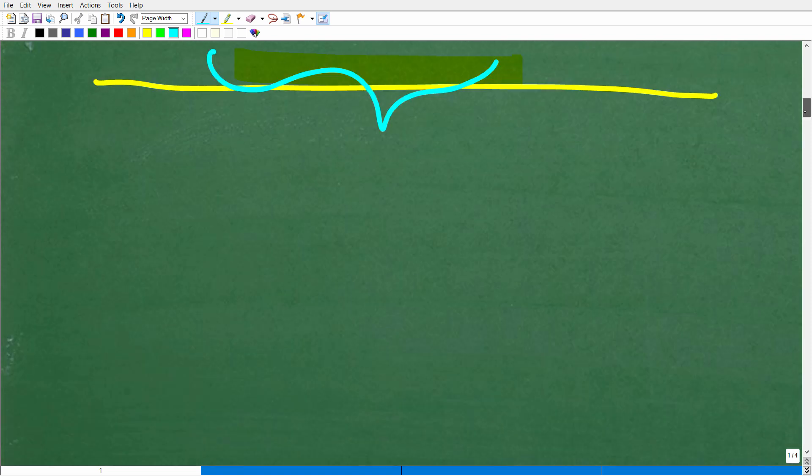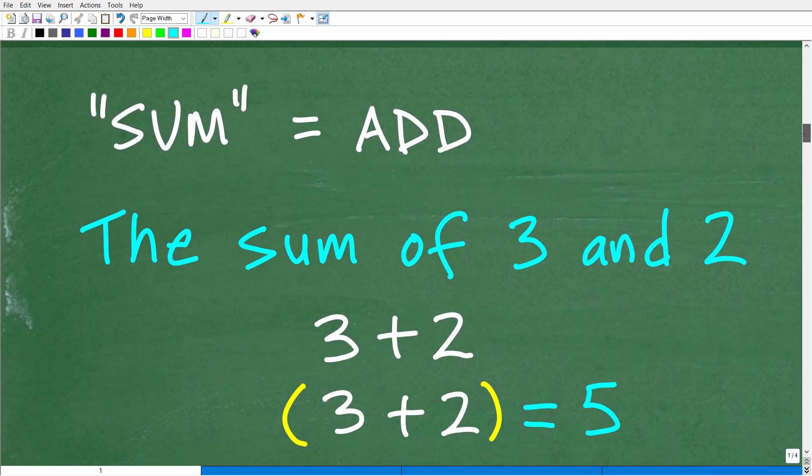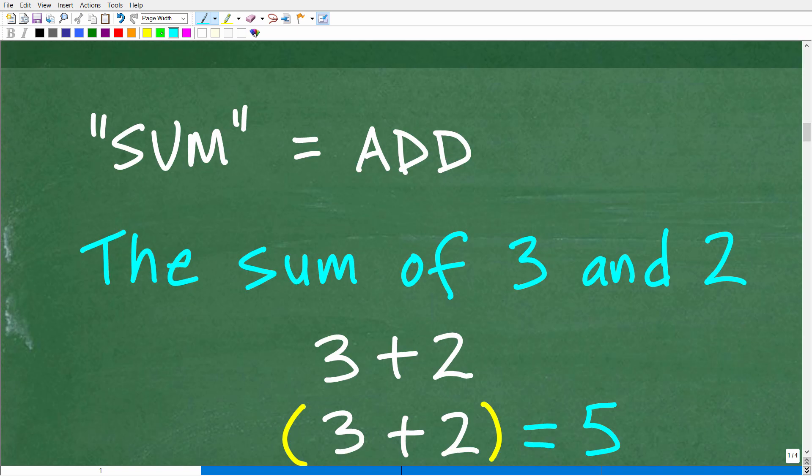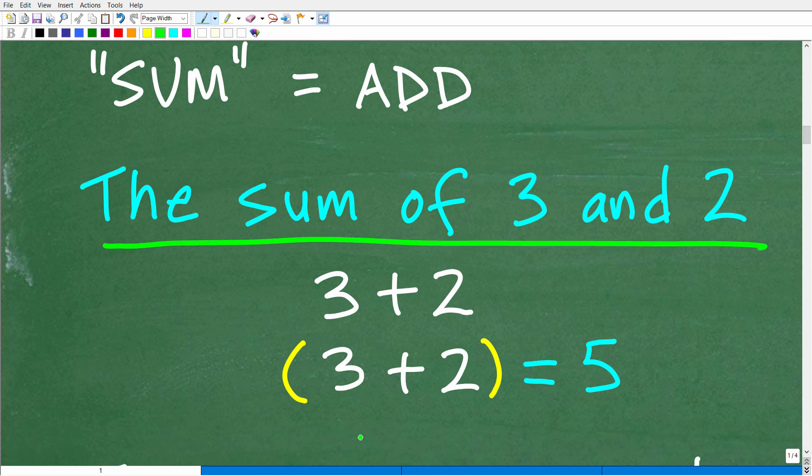Alright, so what is the sum? Well, I think most of you are like, I think it has something to do with adding. Well, that would be correct. Alright, so when we have the sum, you're thinking about adding two things. So the sum of 3 and 2 is 3 plus 2. Alright, so the sum of 3 plus 2 is 5.